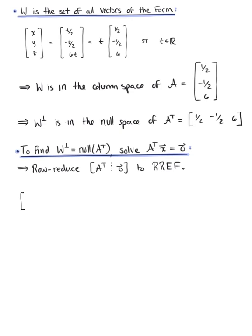So here we go, we have A transpose: 1 half, negative 1 half, 6. Looking at this matrix, the only thing we need to do to attain row reduced echelon form is to scale this first row by a factor of 2, which leaves us with the matrix with entries 1, negative 1, 12. This is letting us know that x sub 1 is equal to x sub 2 minus 12 times x sub 3, that x sub 2 is a free variable, and that x sub 3 is a free variable.